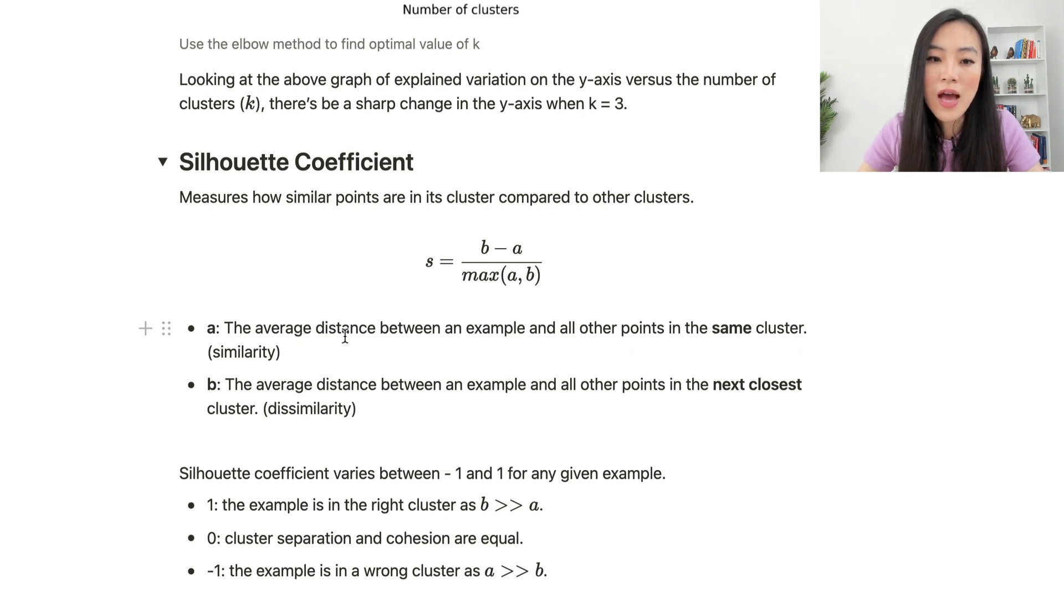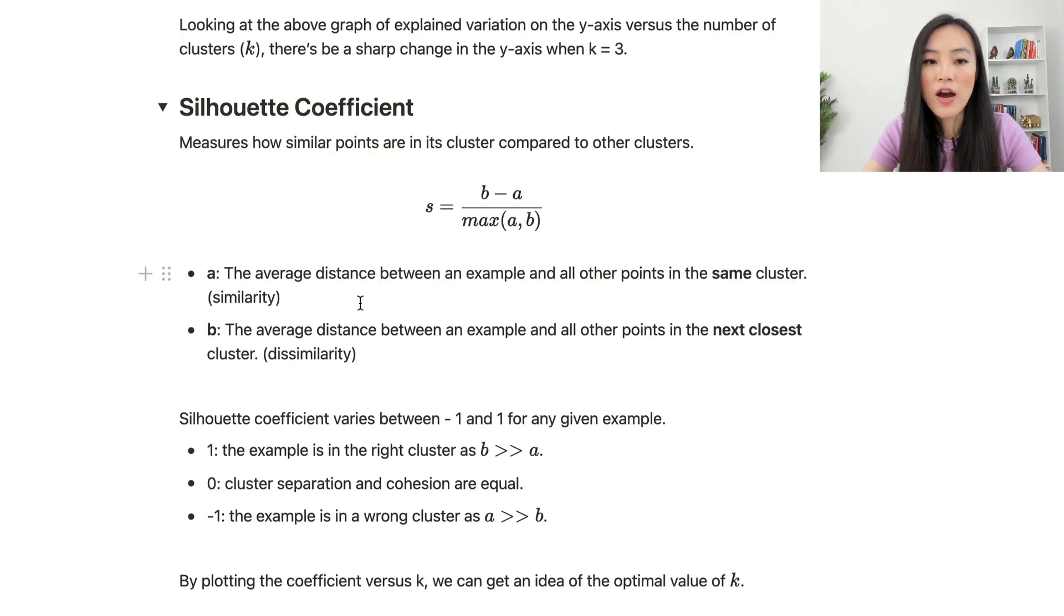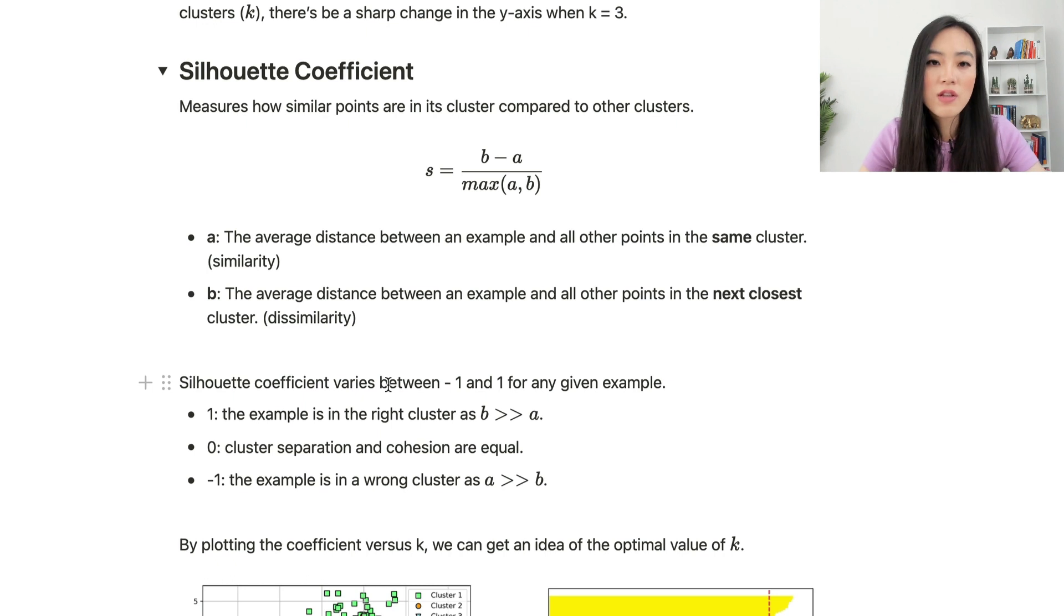a here means the average distance between an example and all other points in the same cluster. b is the average distance between an example and all other points in the next closest cluster. Basically, a quantifies the similarity of an example from other examples in the same cluster, and b quantifies the dissimilarity of an example and other examples in the next closest cluster.